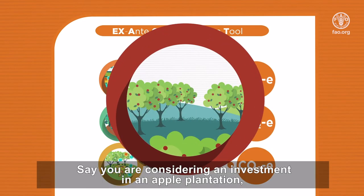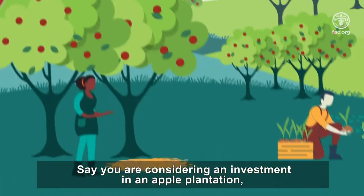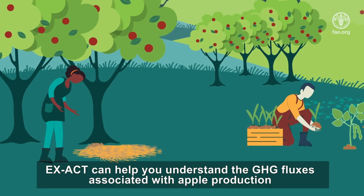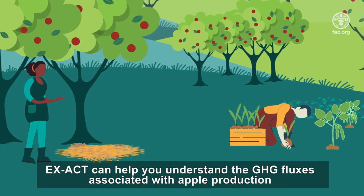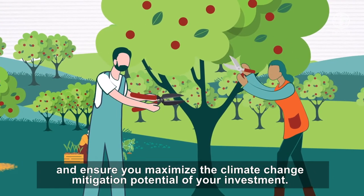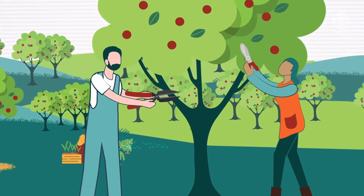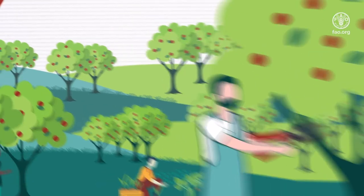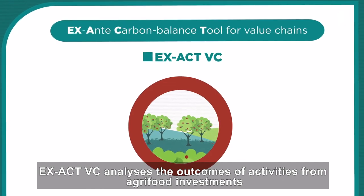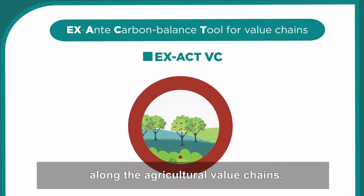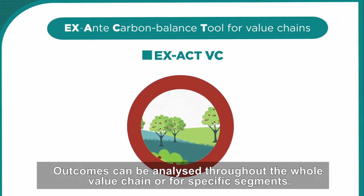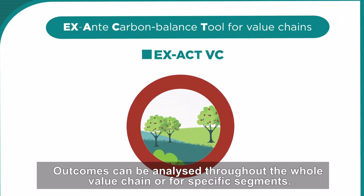Say you are considering an investment in an apple plantation. EXACT can help you understand the GHG fluxes associated with apple production and ensure you maximize the climate change mitigation potential of your investment. EXACT-VC analyses the outcomes of activities from agri-food investments along the agricultural value chains, and can be analyzed throughout the whole value chain or for specific segments.